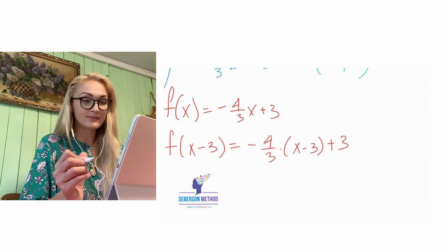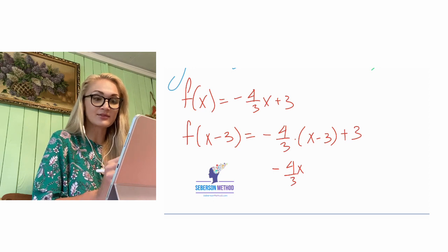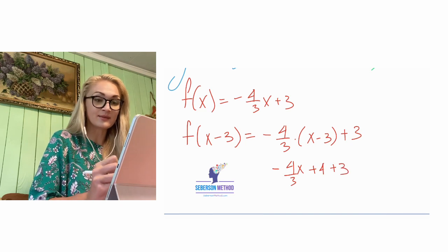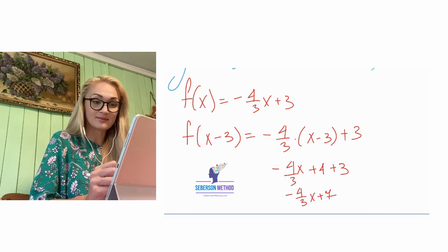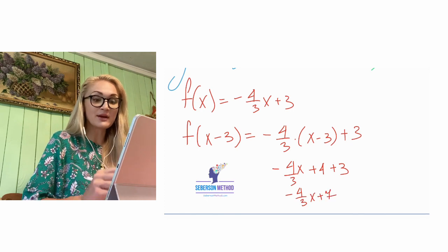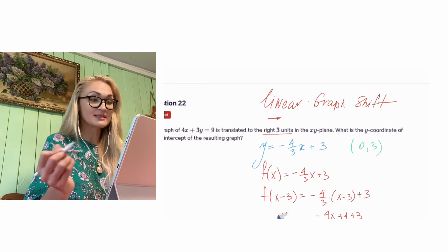Let's see what we get here. Negative four-thirds x — that doesn't change. But negative four-thirds times negative three turns into positive four, plus three. If we finish this equation, it looks like negative four-thirds x plus seven. So what is my new y-intercept? My new y-intercept is (0, 7). That's the answer.